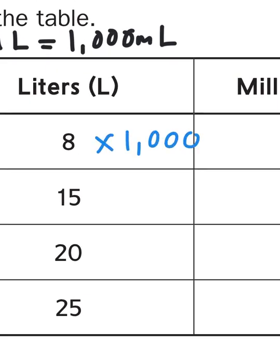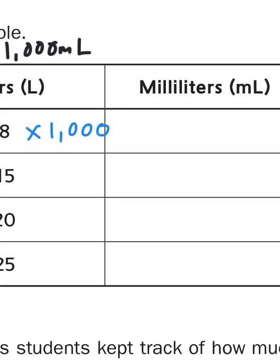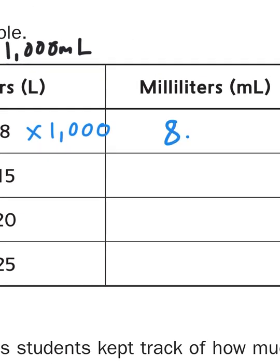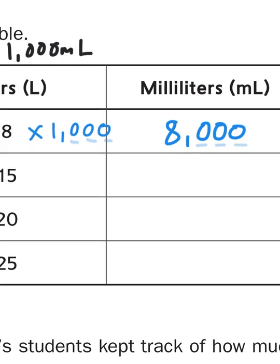Multiplying any number times 1000 is just taking that number and then adding three zeros behind it because there are three zeros in 1000. So I would make sure that there are three zeros in my answer.